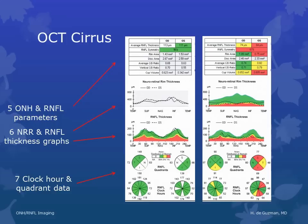Next, look at the thickness graphs. You should see a double or triple hump pattern that looks similar on the two eyes and falls within the green area — a little bit above the green area is still okay. In glaucoma, the RNFL thickness graph loses its double or triple hump pattern and falls into the red and yellow areas. The latest software also allows us to look at the neuroretinal rim thickness compared against the normative database, divided into clock arcs and quadrants color-coded for easy determination of normality or abnormality.